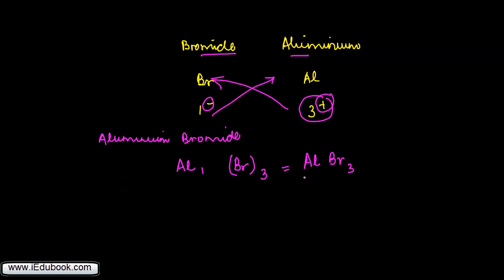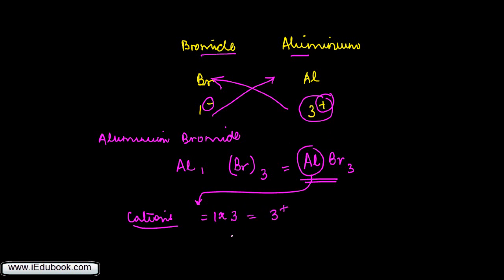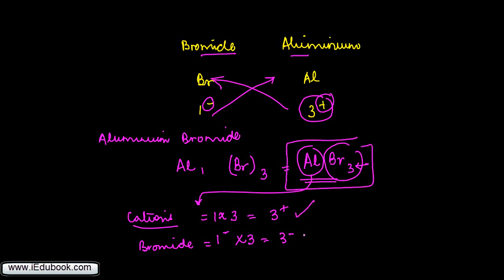Now an important point: if you look at this formula and count the charges — how many cations do we have? There is one aluminium ion with a valency of three plus, so that gives us three positive charges. For bromide, the valency is one minus and we have three ions, so that gives three negative charges. Effectively in the formula we get three positive and three negative, so the total charge is zero.